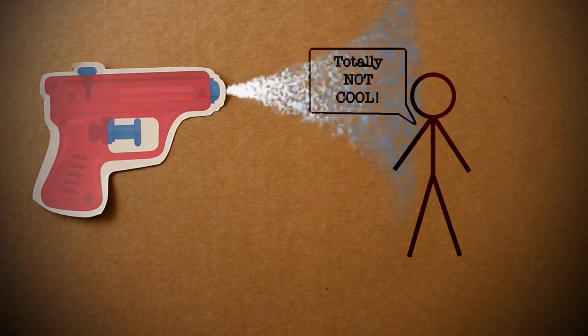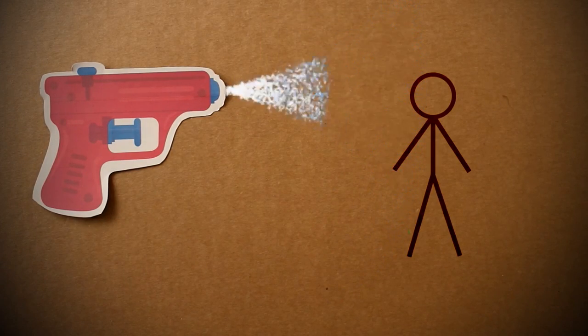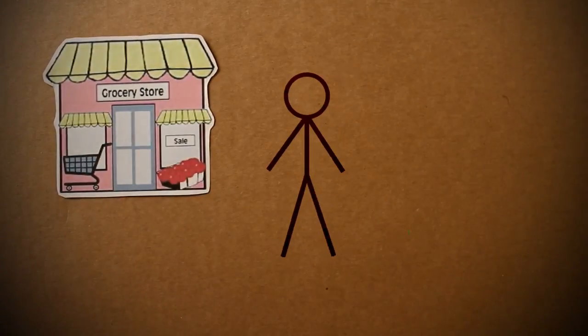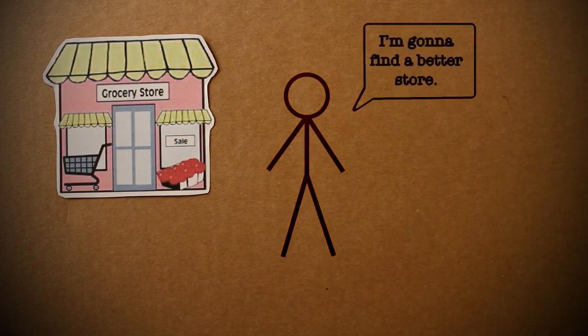The goal here is to make an automatic squirt gun that is triggered whenever it detects motion. I headed over to my local grocery store and tried to find something that we could use to build this.